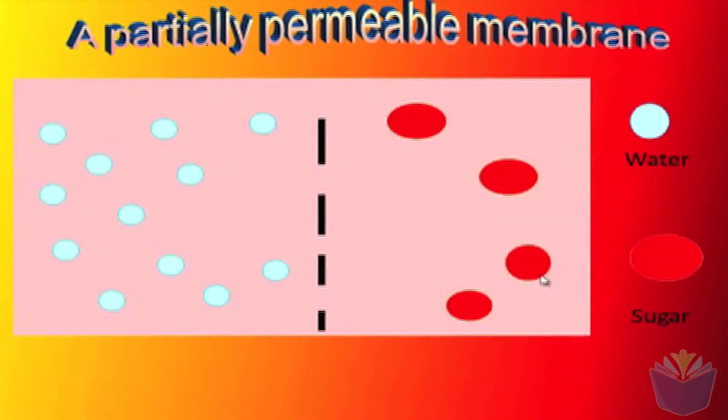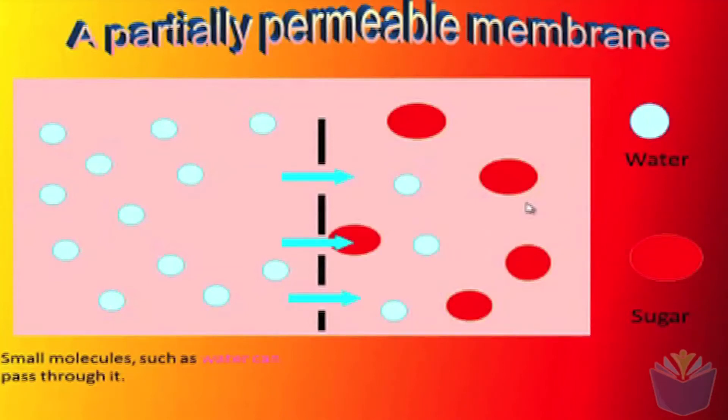So within this example we've got water on one side over here and we've got a sugar solution on the other side. And what actually happens is the water is able to cross over this barrier because it's small enough. However, the sugar molecules as you can see are too large to pass through into the opposite direction. So therefore we have a net flow of water moving from left to right.